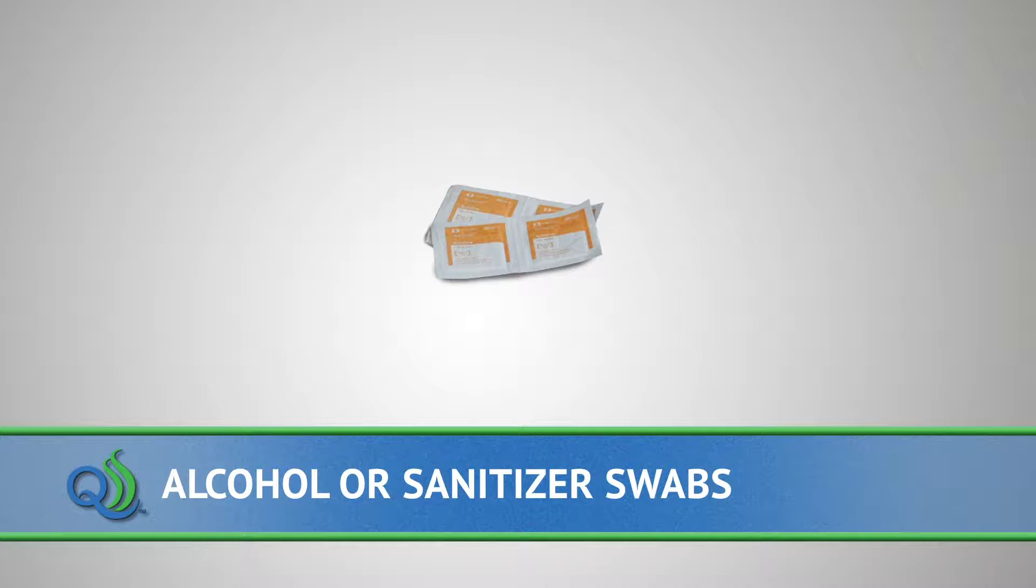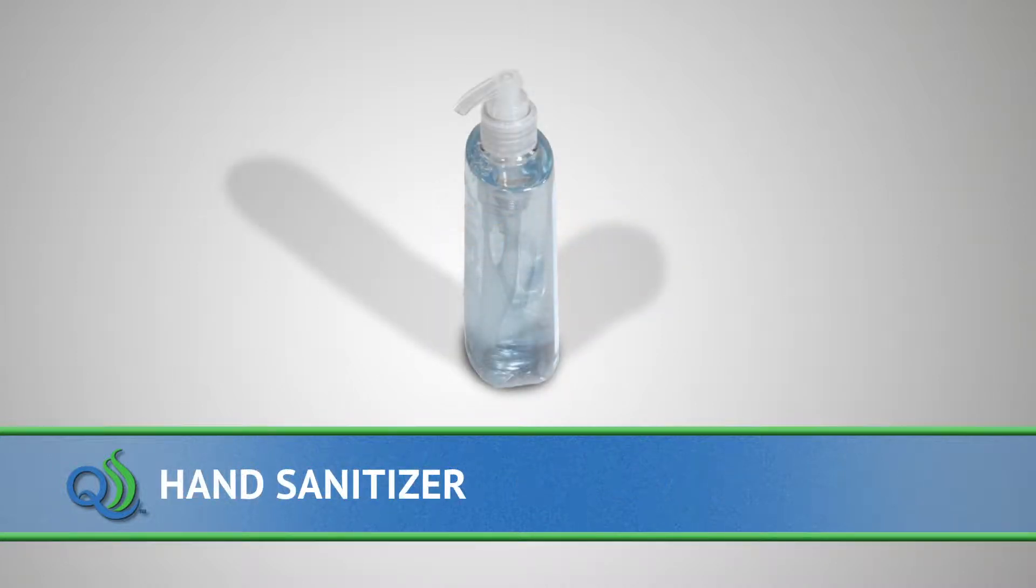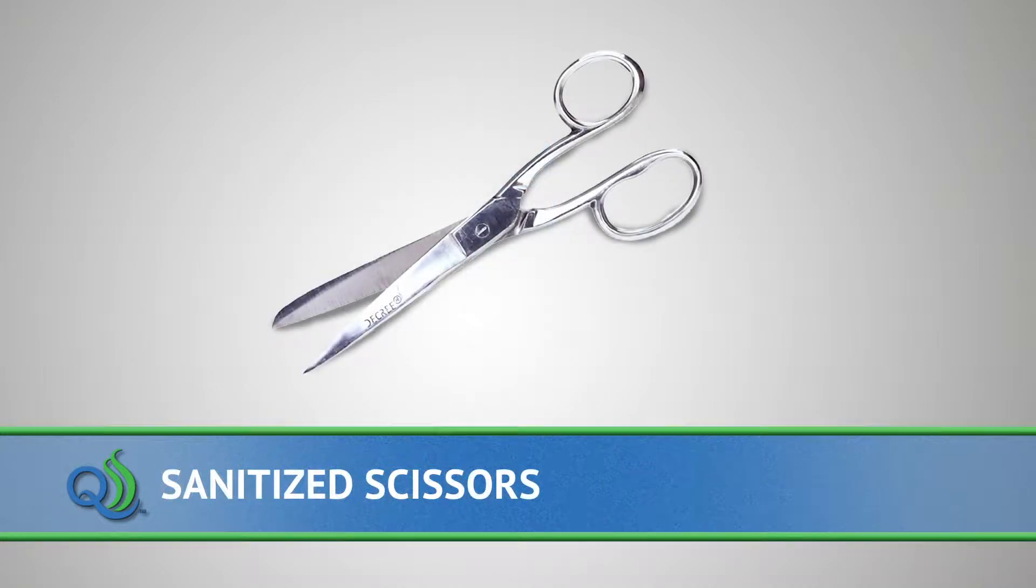You'll also need alcohol or sanitizer for swabbing the inside of the stainless steel port and a separate swab for cleaning the front of the QualiTrue sterile septum prior to needle insertion, hand sanitizer to clean hands before sampling, and a pair of sanitized scissors or other tool for cutting.